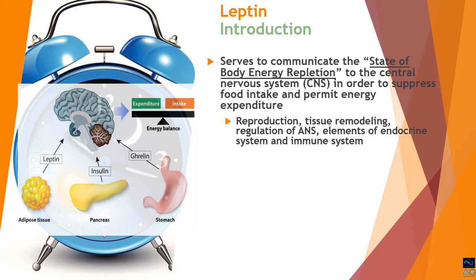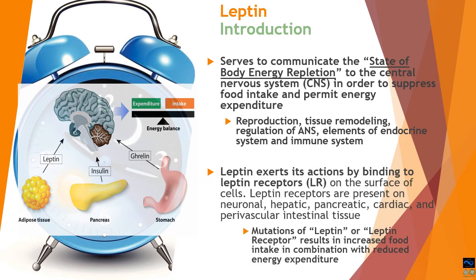Leptin is able to communicate to the central nervous system the state of body energy repletion. When the body is in a well-fed state, leptin concentration is higher and in proportion to fat reserves in adipose tissue. It orders suppression of food intake and permits higher energy expenditure via the hypothalamus control center. When the body is in a high energy repleted state, it will undergo reproduction, tissue remodeling, and repair of the endocrine and immune system. Leptin has diverse functions in the body.